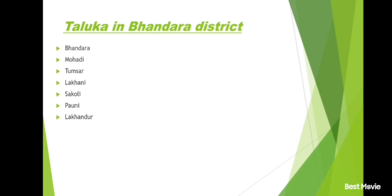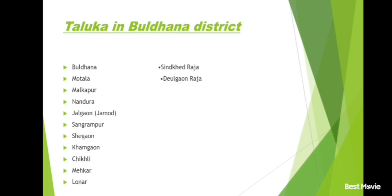Beed district and its talukas: Beed, Georai, Patoda, Ashti, Shirur, Ambajogai, Kaij, Majalgaon, Dharur, Parli, Wadwani.